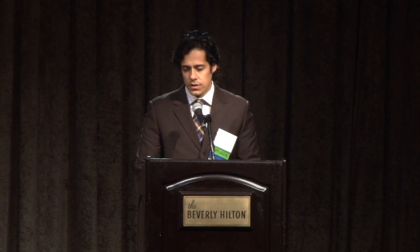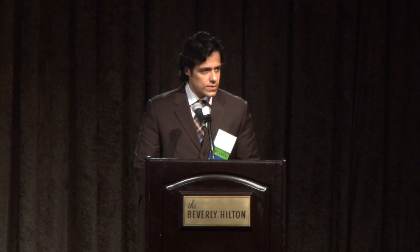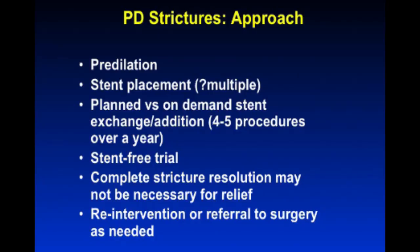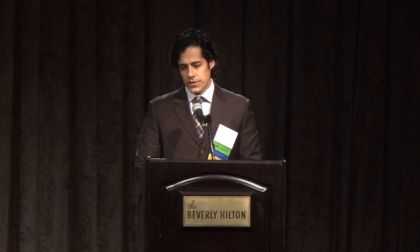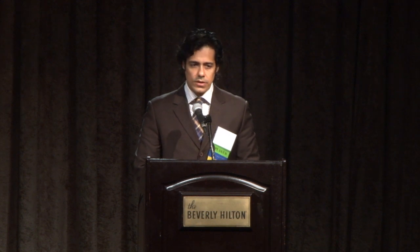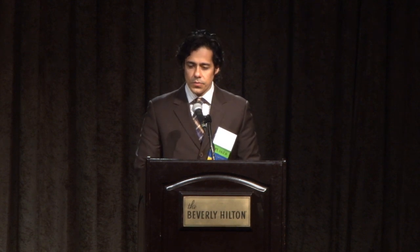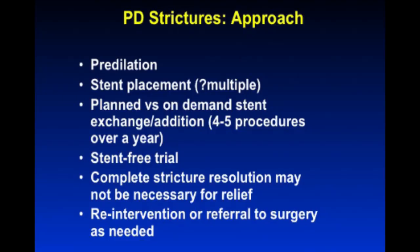The approach to strictures usually involves pre-dilation either with a balloon or catheter-based tapered dilators. There's a technique of screw-dilating strictures and coring them out which works well. Then stent placement — some argue for multiple stent placements, similar to the approach for post-OLT strictures, adding stents over a period of a year. Patients should expect several procedures over the course of a year; this is not a one-and-done deal. At some point you try without a stent, keeping in mind that fluoroscopic resolution of strictures is not necessary for pain relief.